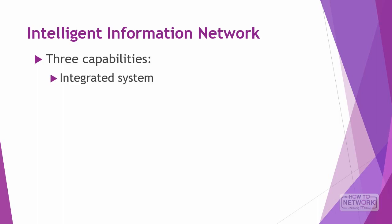Cisco IIN has three specific capabilities. First, it acts as an integrated system — the network is integrated with applications, middleware, and services. Second, there is active delivery — the network is a full participant in managing, monitoring, and optimizing service delivery and applications. Third, policy enforcement — enforcing policy in such a way as to achieve business goals and create a link between business processes.